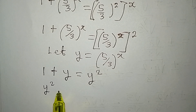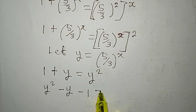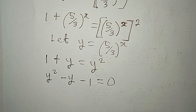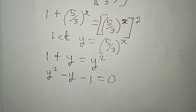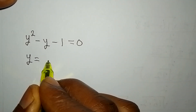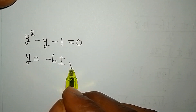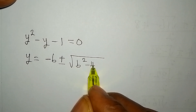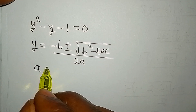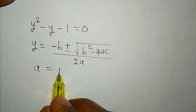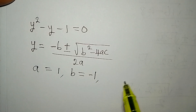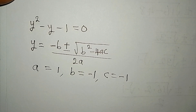Let us arrange this in a better way. y squared should come first, then we have minus y, then minus 1, equals 0. So the question is how do we solve this? We're going to solve this by using the formula method. Our a is going to be 1, that is the coefficient of y squared. Our b is minus 1, that is the coefficient of y. Then our c is minus 1 as well, that is the constant.